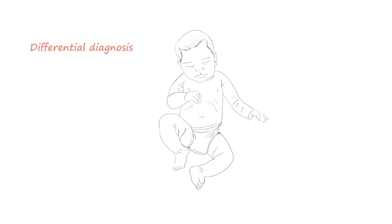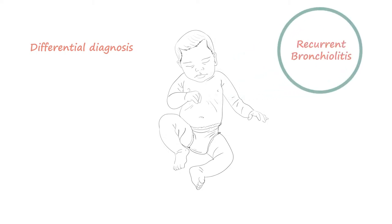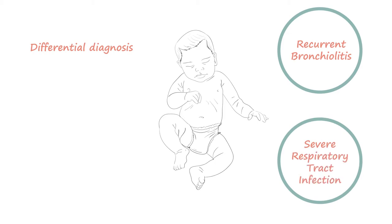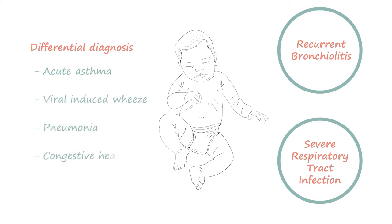The differential diagnosis is important, especially if an infant presents with recurrent bronchiolitis or a severe respiratory tract infection. Differential diagnoses include acute asthma, viral injuries, pneumonia, congestive heart failure, and pertussis.